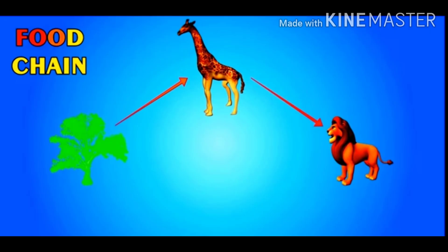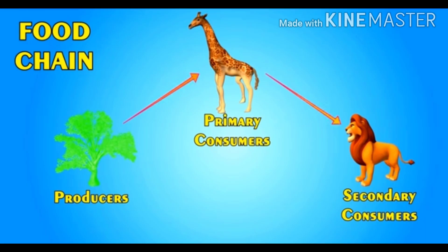So now we know that plants make their own food, some animals eat plants, and some animals eat those animals that eat plants. We can say that all are dependent on plants for their food. It is a process of who eats whom, which starts from the plants. In a food chain, plants are known as producers, as they produce their own food.